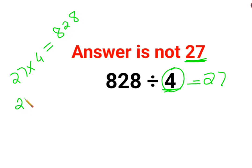Now let's see what happens. When you multiply 27 by 4, you get the answer as 8, carry 1, 108. Answer is 108. It is not 828. That means this answer is absolutely wrong.